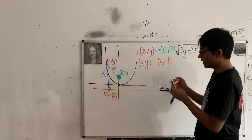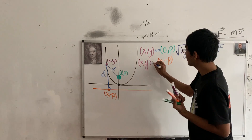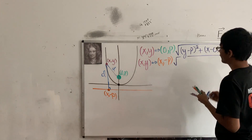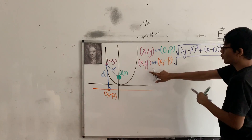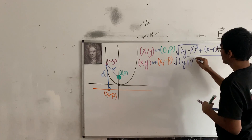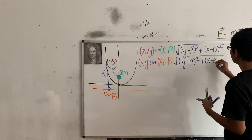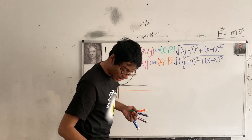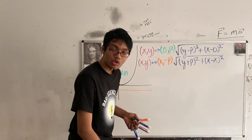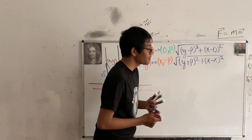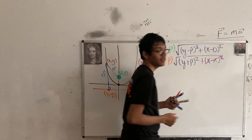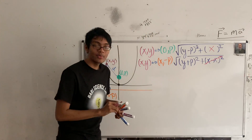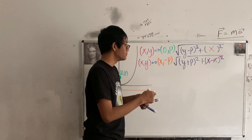Using the distance formula again, that second distance is the square root of y minus negative p squared plus x minus x squared, which simplifies to the square root of y plus p squared plus zero. We now set the two distances equal: the distance to the focus equals the distance to the directrix. We can also simplify x minus zero to just x.